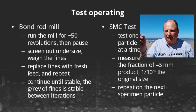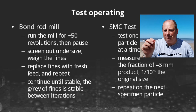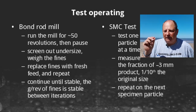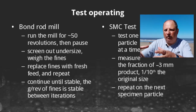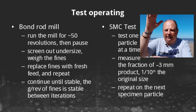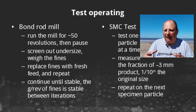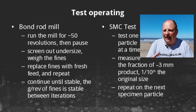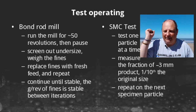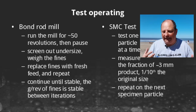The SMC test is different — you're impacting one particle at a time. Nothing is reaching equilibrium here; it's simply a matter of taking your 30 to 40 specimens, putting them in the machine, striking them, pulling them out, screening them to figure out how much of the product is one-tenth of the original size, noting that down, then putting the next specimen in. You keep repeating until all specimens are used up.